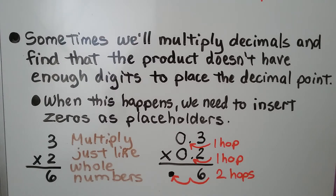Sometimes we'll multiply decimals and find that the product doesn't have enough digits to place the decimal point. When this happens, we need to insert zeros as placeholders.